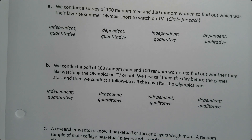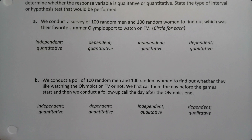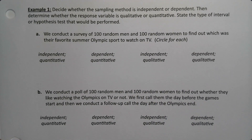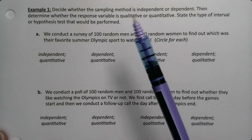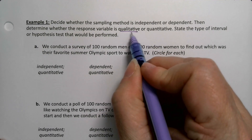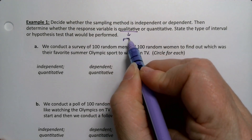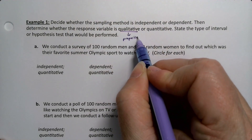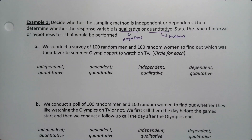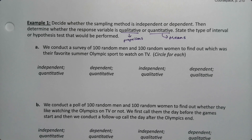So I've primed the pump here for a little example that we can go through. We want to figure out whether the following are independent or dependent for the sampling method, and we also want to determine whether the response variable is qualitative or quantitative. Because qualitative will mean proportions and quantitative will mean means — those are the two big things we have to figure out.